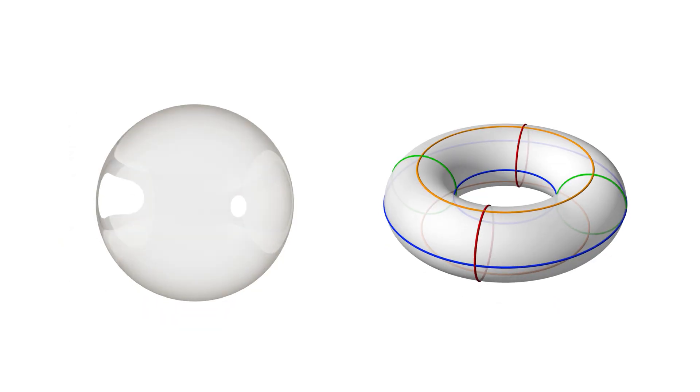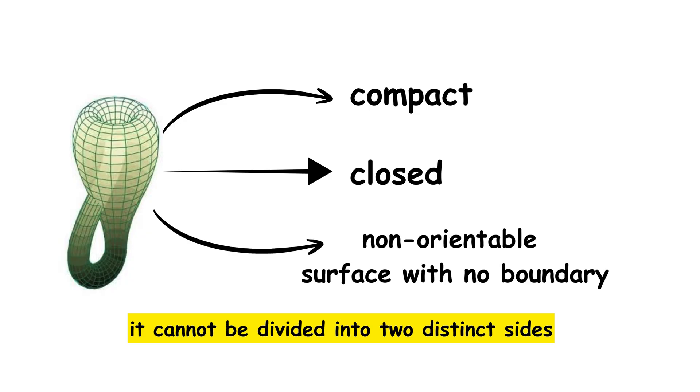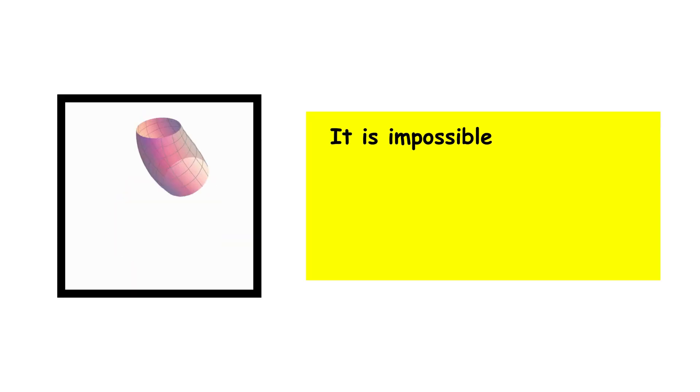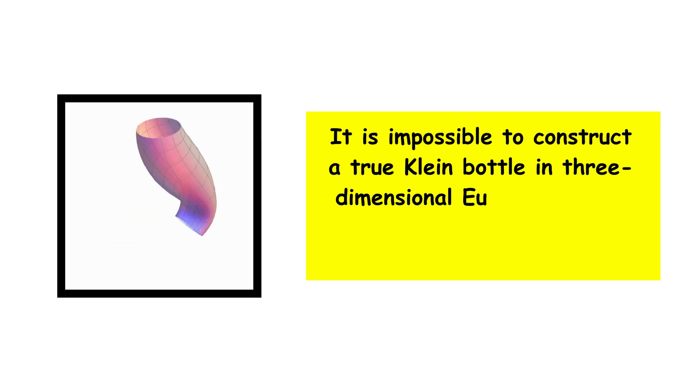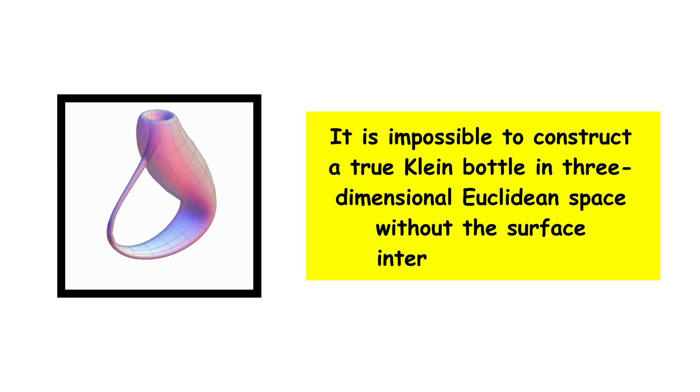Unlike a sphere or a torus, it cannot be divided into two distinct sides. It is impossible to construct a true Klein Bottle in three-dimensional Euclidean space without the surface intersecting itself.